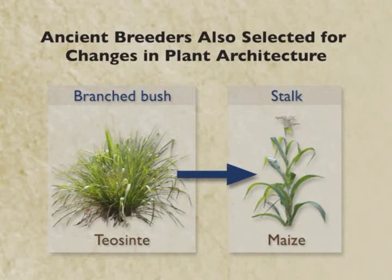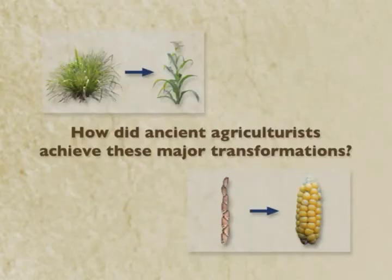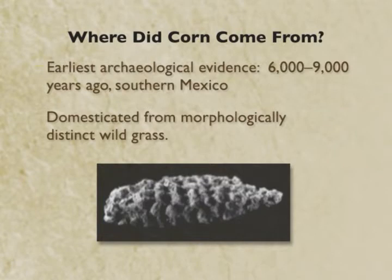You're planting an agricultural field. So how did ancient agriculturists achieve these major transformations? There's an archaeological record of corn — you see the first evidence of corn-like maize cobs appearing maybe six to nine thousand years ago. Those can actually be dated. The earliest sites are in southern Mexico near the sites where wild teosinte grows.